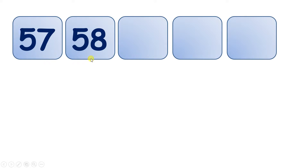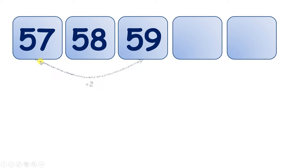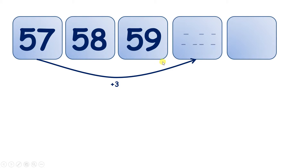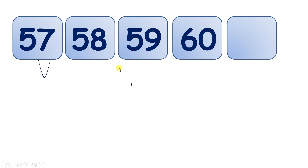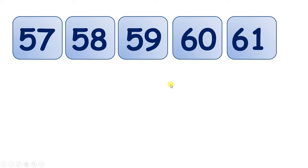Now, we know that when we're counting forwards, going to the next number is the same as adding 1. But if we count on 2 numbers, then we're adding 2 to the number that we started with. Count on 3 numbers, and we're adding 3. Or count on 4 numbers, and we're adding 4. And so on. This is why you can add by counting on, just like you know how to add by counting on on a number line, or counting on on your fingers.